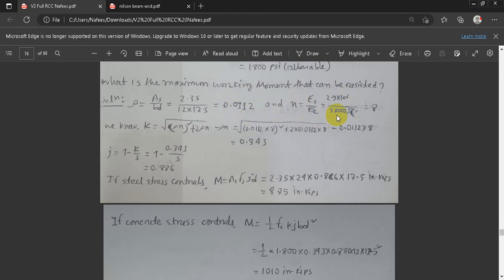We know k value equals root over rho n squared plus 2 rho n minus rho n. We know k value equal to 0.343, which is 0.886. We know k value equal to 0.886.